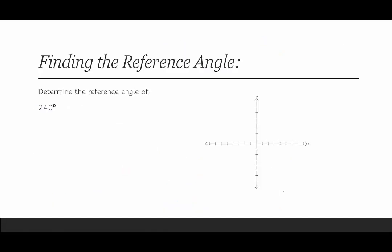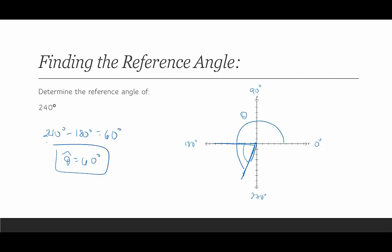Let's find some reference angles. First, we're going to find the reference angle for 240 degrees. Labeling the quadrants: 0°, 90°, 180°, 270°. 240 degrees indicates the terminal side is in quadrant 3, closer to 270 than 180. The reference angle is the acute angle between the negative x-axis and that terminal side. So we take the angle minus 180: 240 minus 180 equals 60 degrees. Therefore theta hat equals 60 degrees.